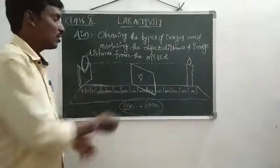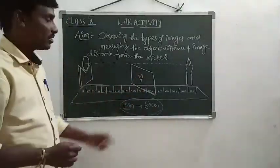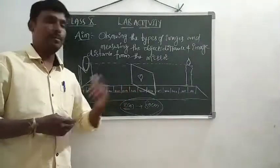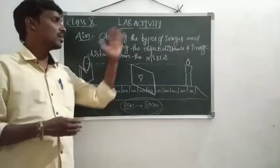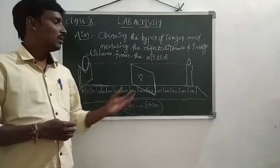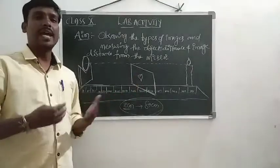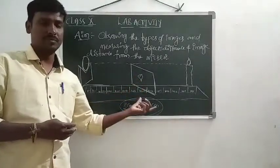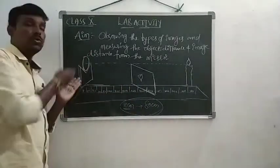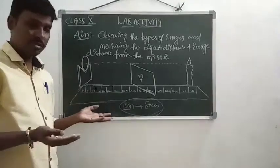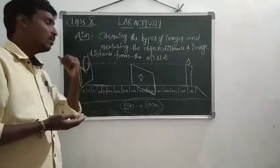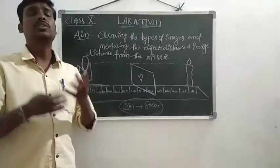Adjust the setup to get a sharp image on the paper. After completion of the activity, we conclude that sometimes we get images on the screen — the paper — and sometimes the image appears on the mirror only.